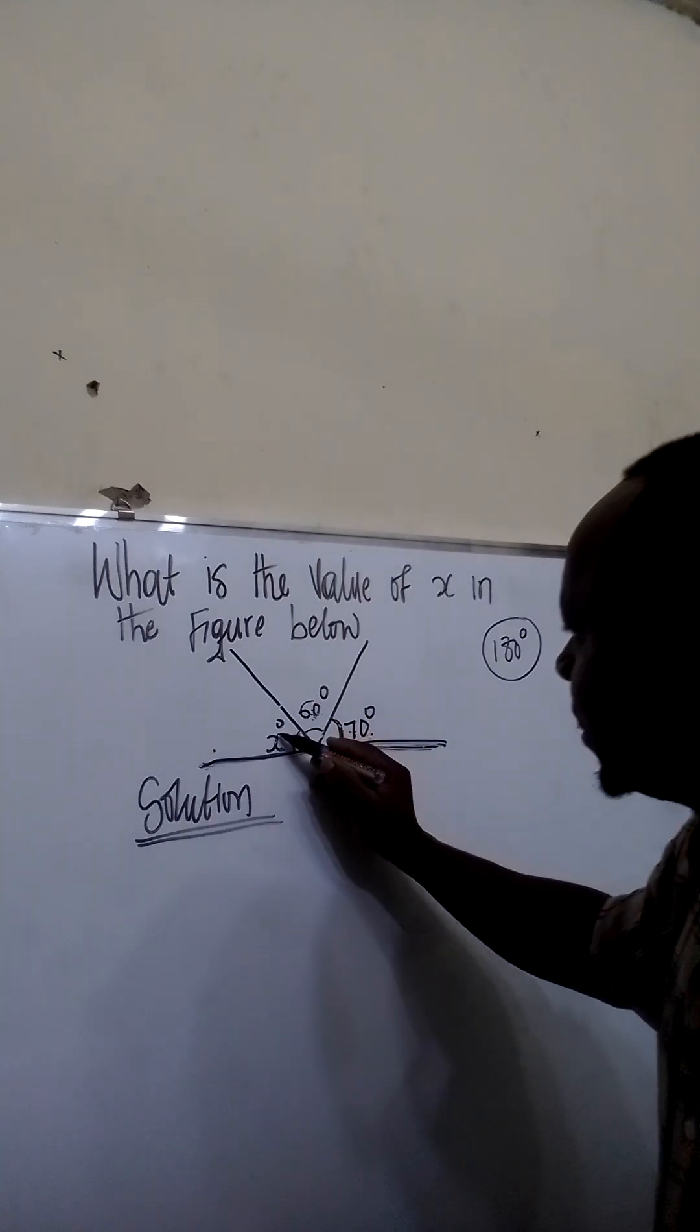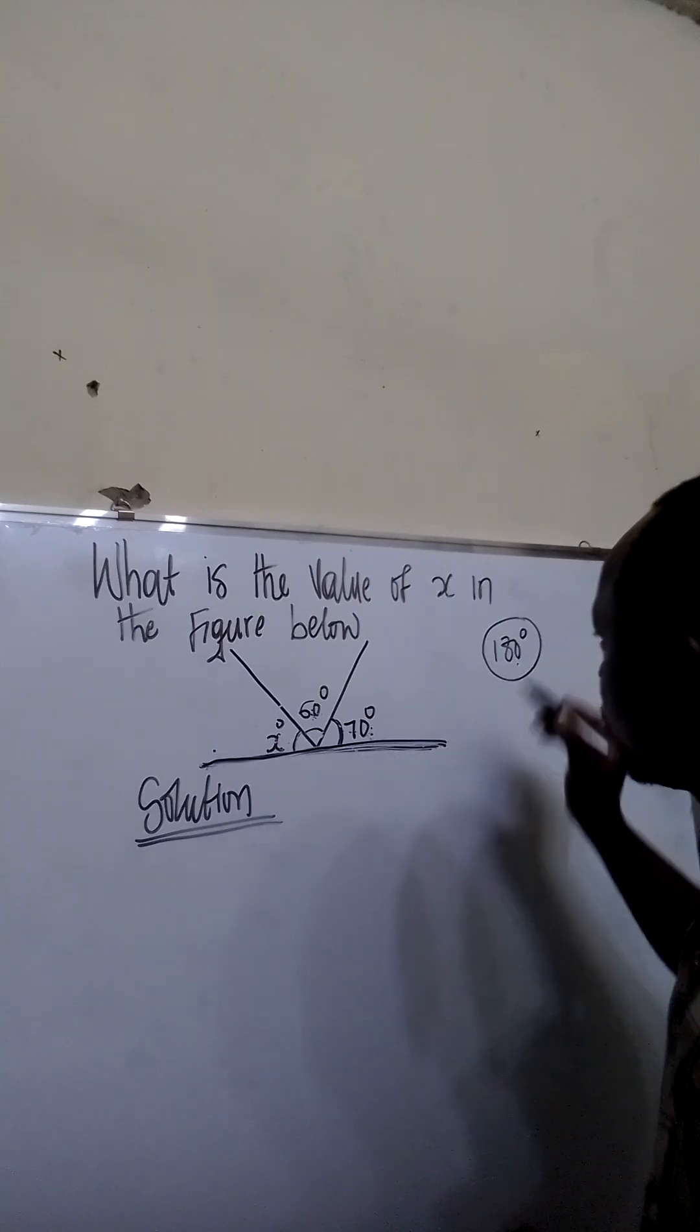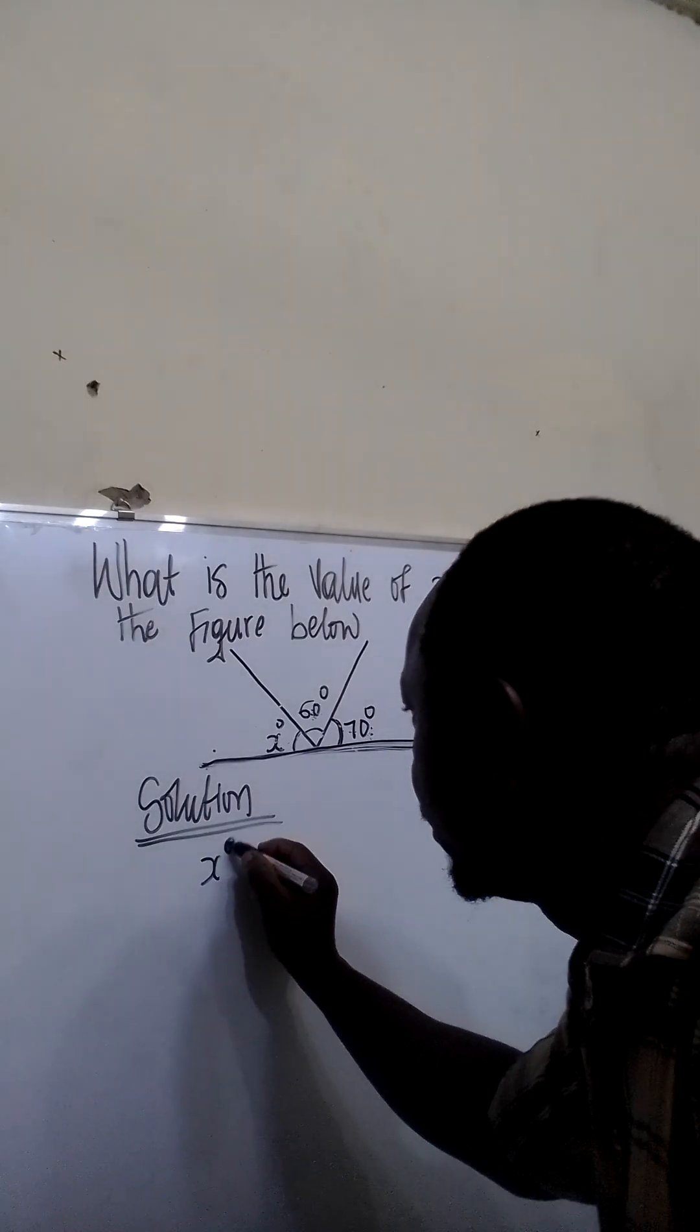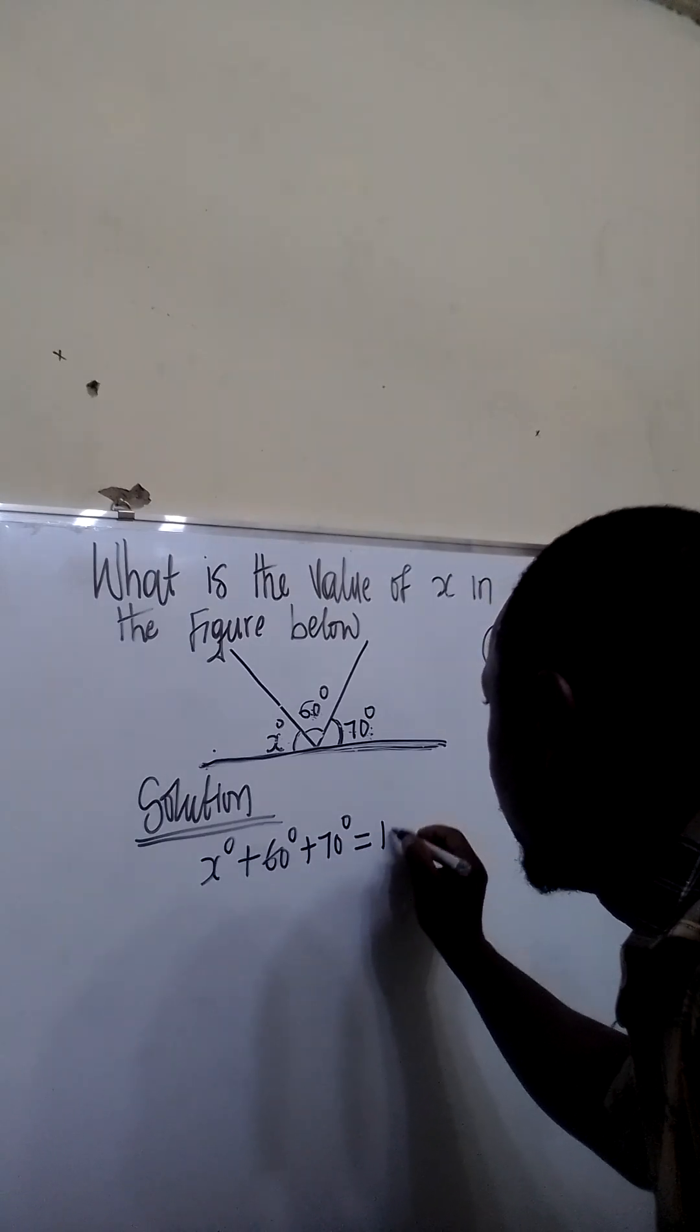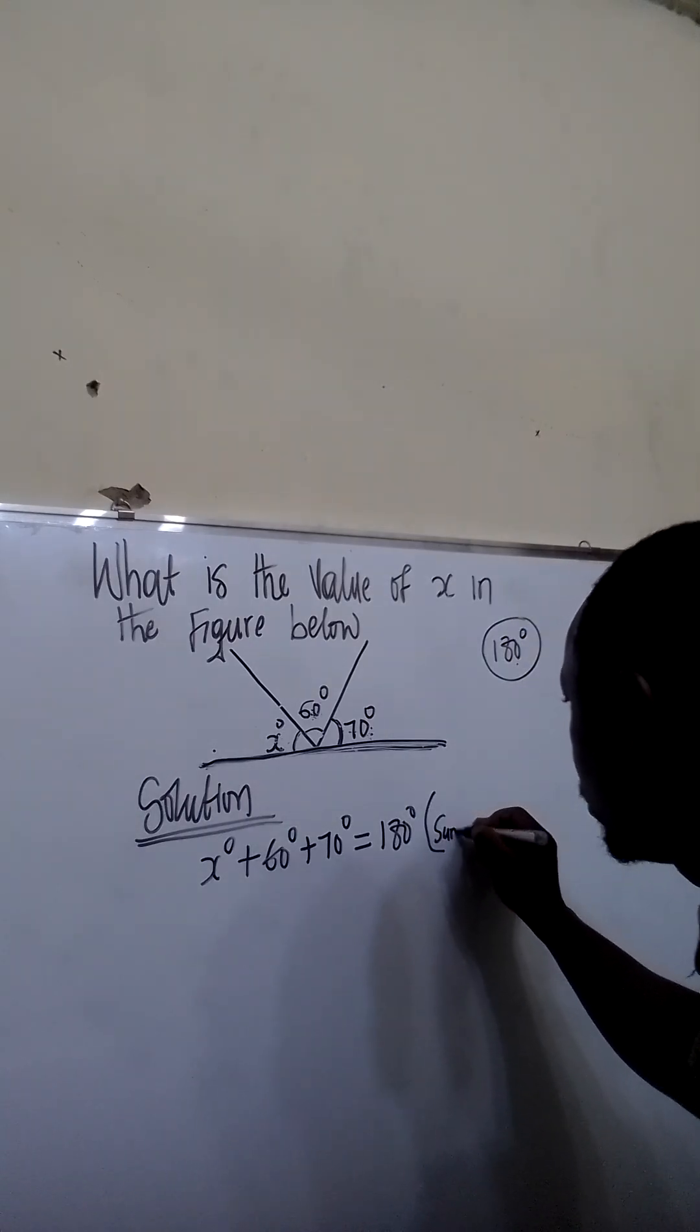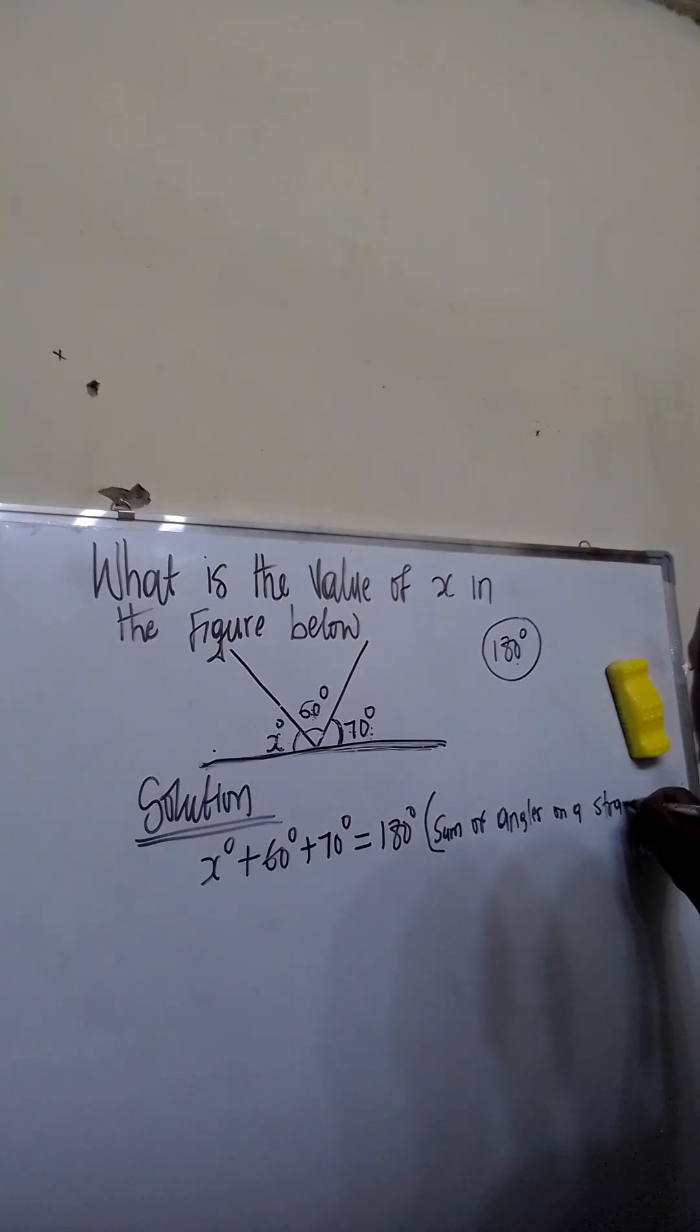This implies when you add X degree plus 60 degrees plus 70 degrees, it must be equal to 180 degrees. The reason is the sum of angles on a straight line.